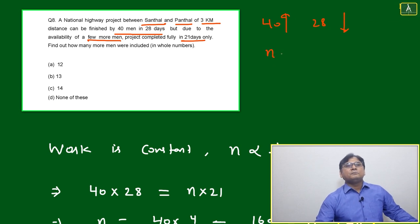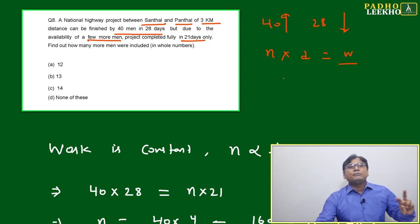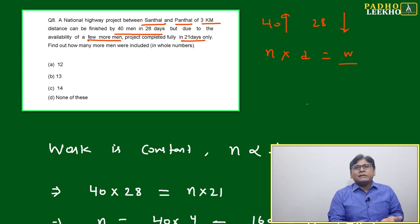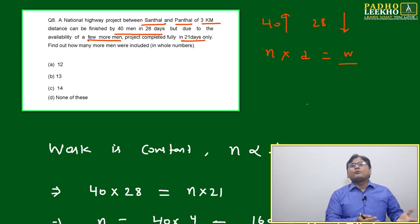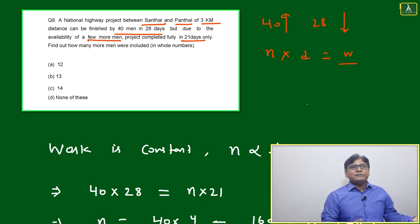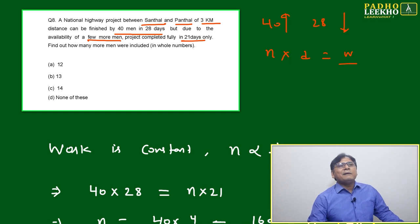Because number of men times days will equal work. If work is constant, then n and d will be inversely proportional to each other. Simply, 40 men can finish the work in 28 days, but due to availability of extra men, project is completed in 21 days.